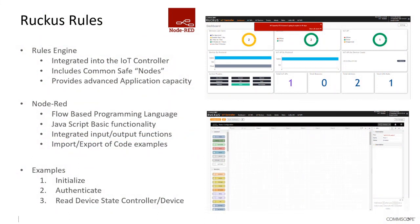Within the Ruckus IoT controller, we have integrated a full rules engine from Node-RED. The rules engine is considerably more than just a baseline rules engine — it's more of a complete programming language. It allows integrators, programmers, or developers to build up more complex sets of actions based on interconnection to the IoT controller. The rules engine runs as a service on the IoT controller and has resources — memory, CPUs, etc. — associated with it.